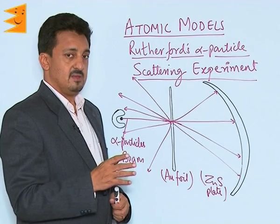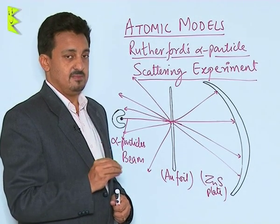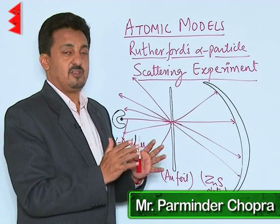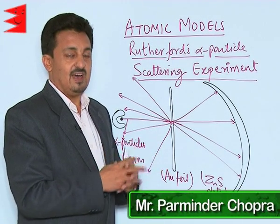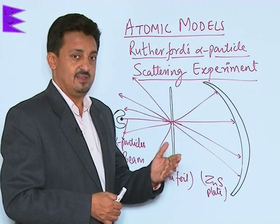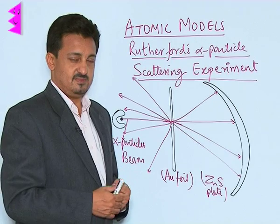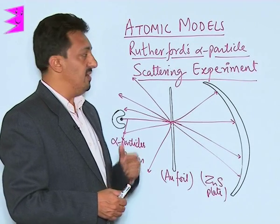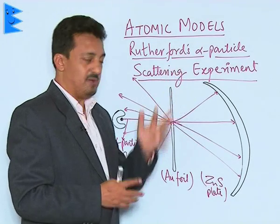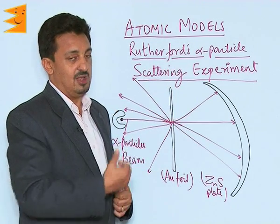After understanding J.J. Thomson's model of atom and its drawbacks, let us move to the experiment which disproved it. It was Rutherford and his students' alpha particle scattering experiment which proved J.J. Thomson's model of atom wrong.